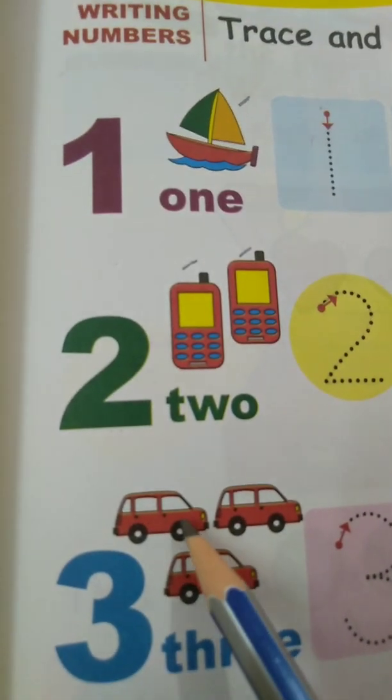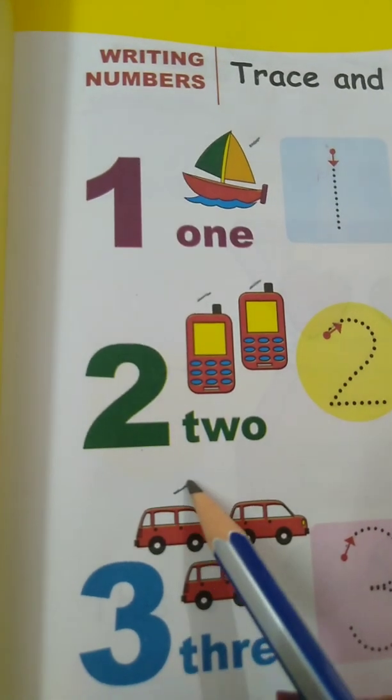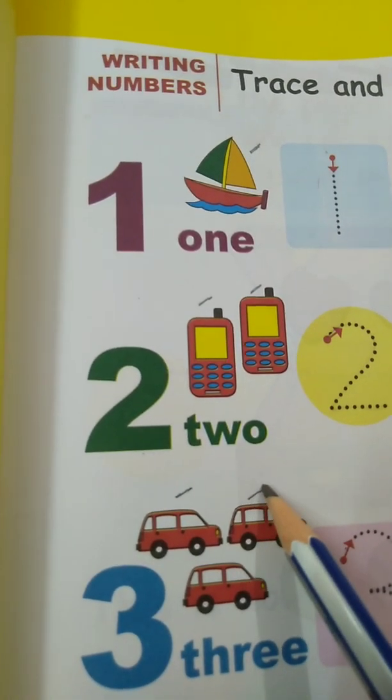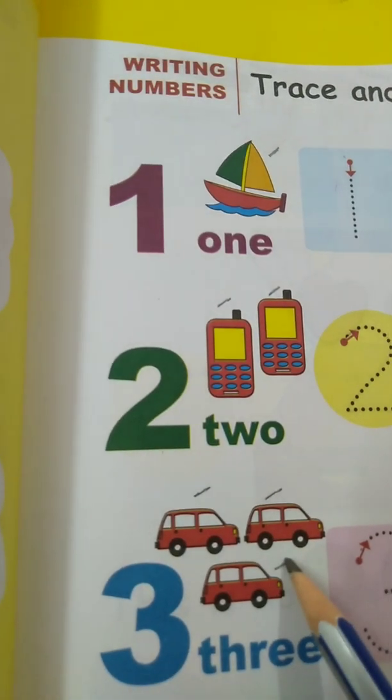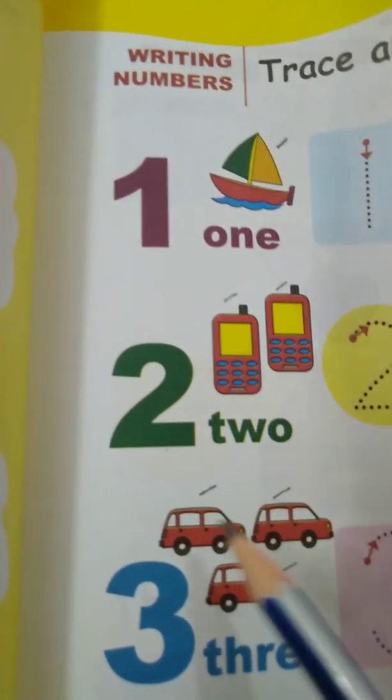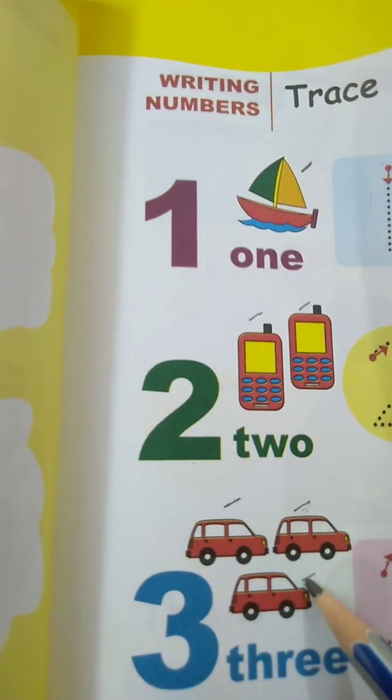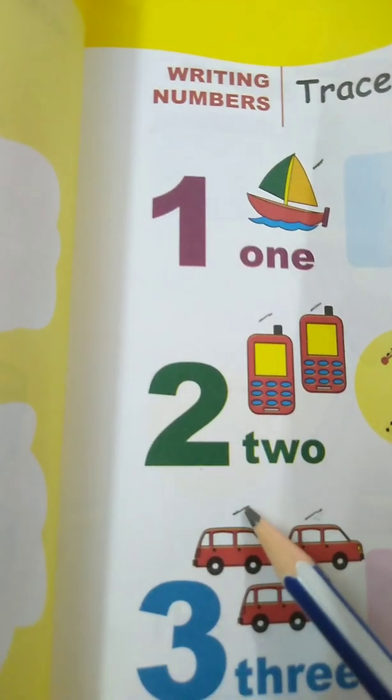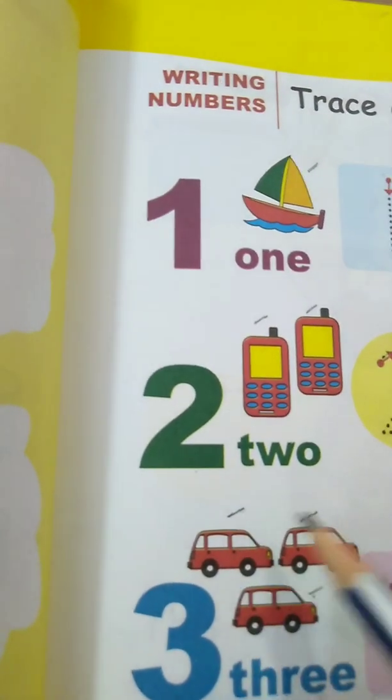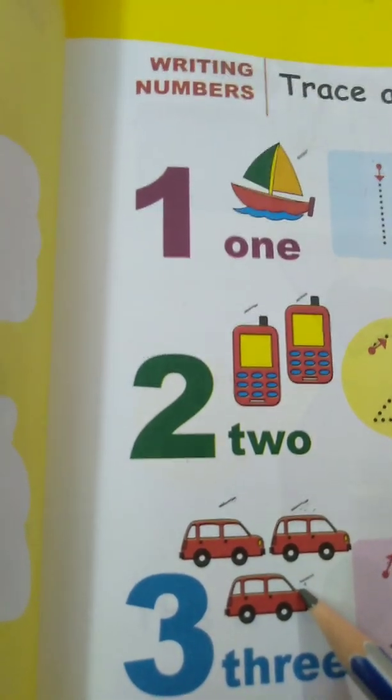How many cars are there? 1, 2 and 3. 3 cars. You know why I am putting these marks over here? So I don't count it again. This means that I have already counted this. 1, 2 and 3. 3 cars.